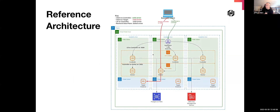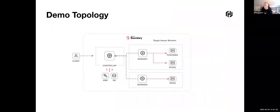Looking at the reference architecture, you can see there are multiple controllers in this native AWS architecture — but it could be on-premises. Based on the controller I connect to, I would hit a worker and go to a target instance. I want to say: if I want to hit a specific target instance, it must be via a specific worker — so these have become target aware. For the demo, I have this topology running on my laptop. I have a controller set up and two workers. Worker one is aware of Postgres and MySQL. Worker two is aware of Redis. Worker one is not aware of Redis, and worker two is not aware of Postgres.